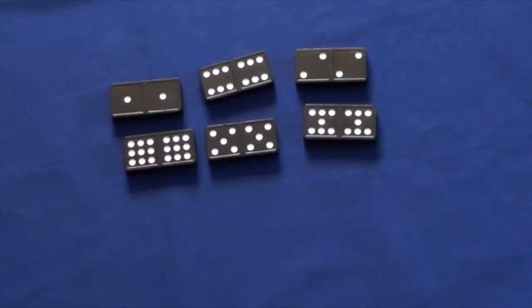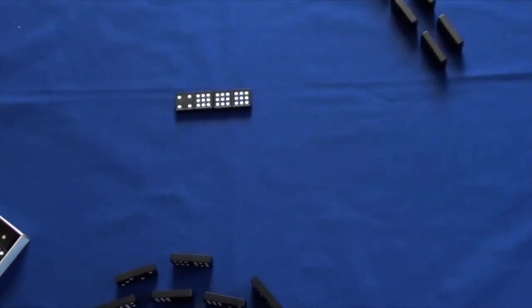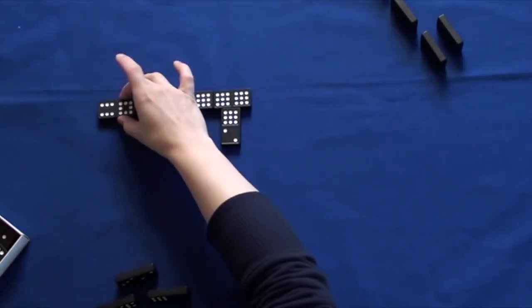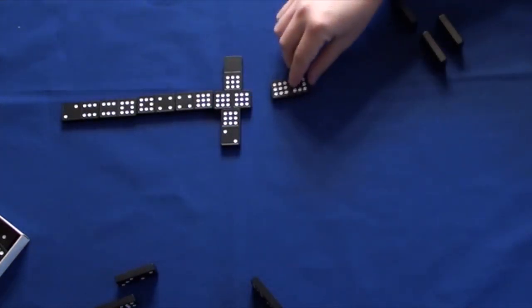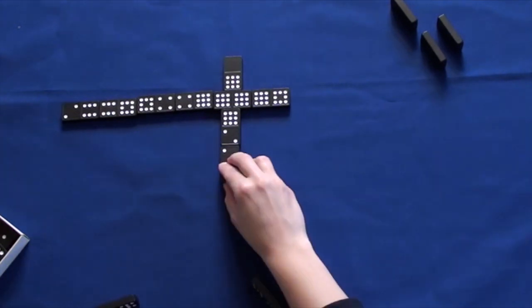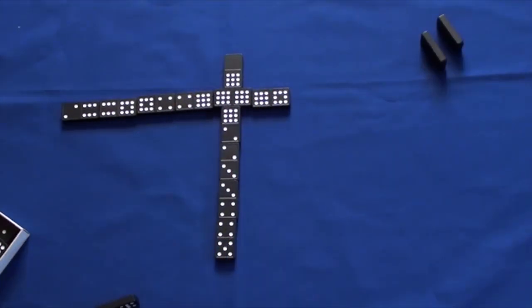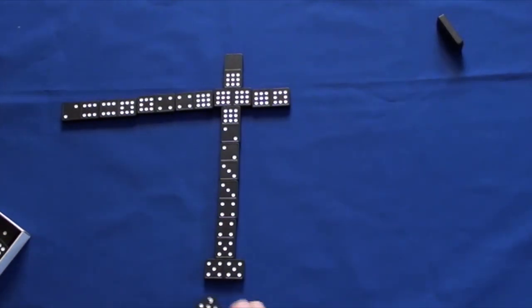Doubles are extra exciting when playing dominoes. Check out these double tiles. The player who starts the game is the one with the highest double tile. In this game, the first player had double nine. After laying a double tile, players can play on all four sides. They found a double five tile. How fun!